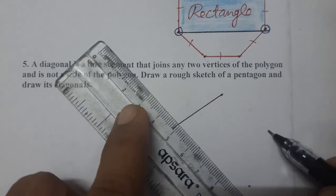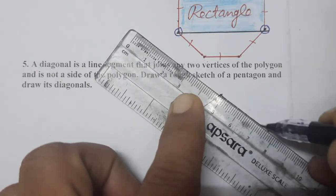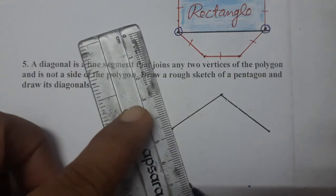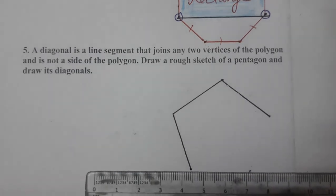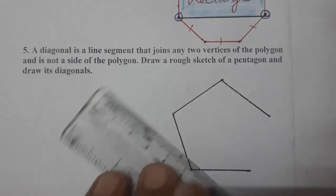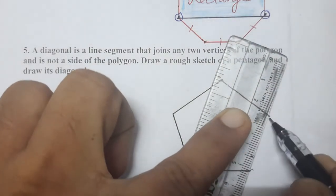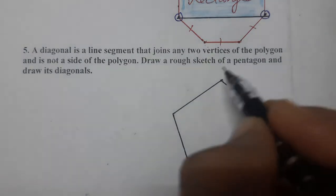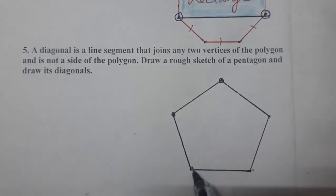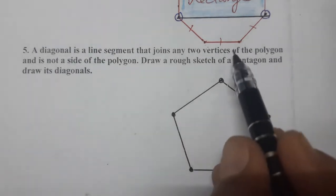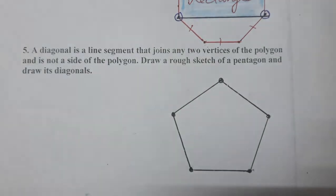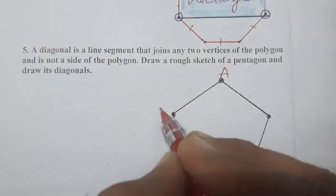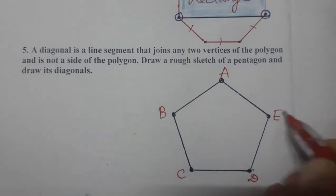We have to draw one pentagon. The pentagon is forming — it contains five sides: 1, 2, 3, 4, 5. We have completed drawing the pentagon. Now we have to draw its diagonals. Let's name the vertices A, B, C, D and E, and we will start from all the vertices one by one.